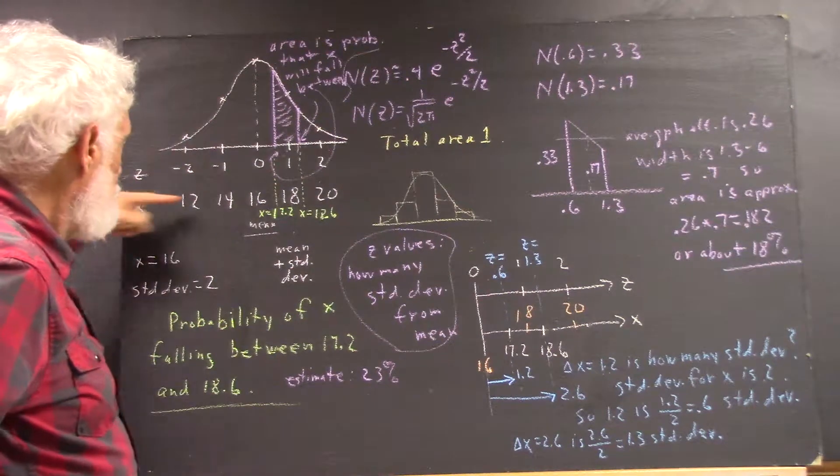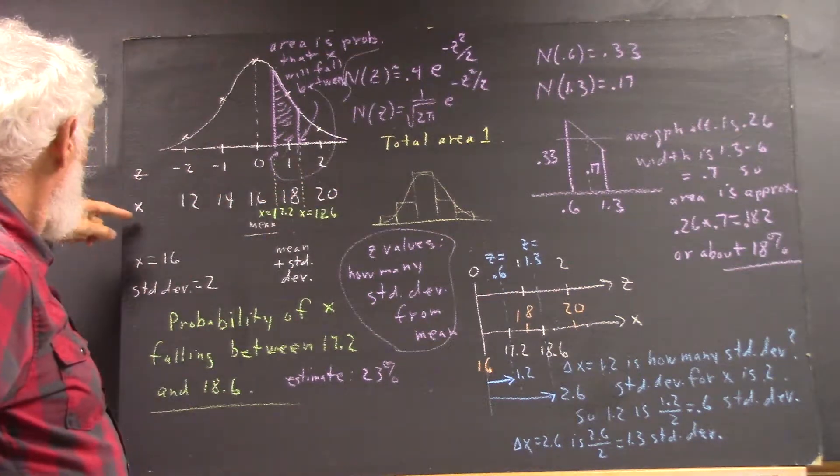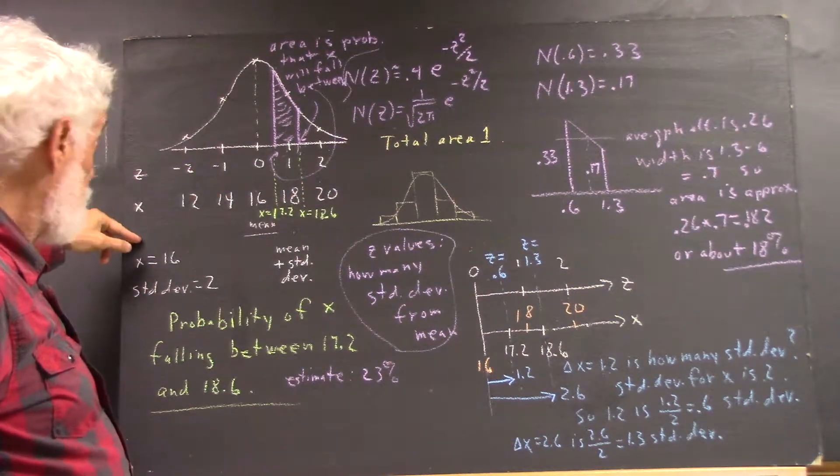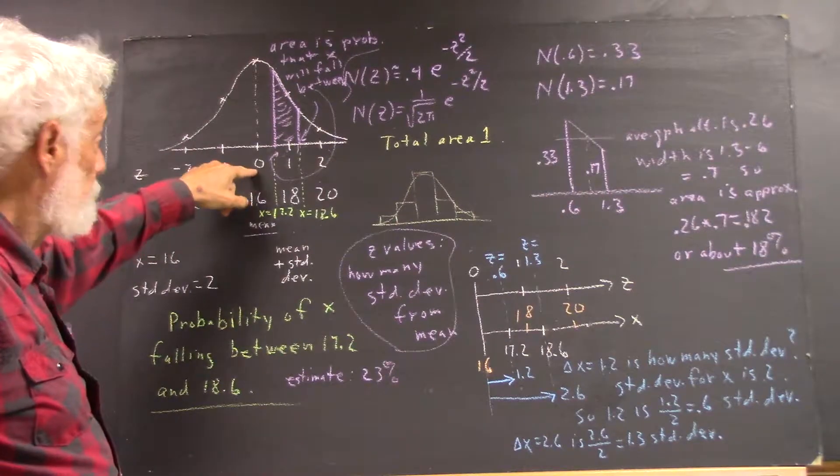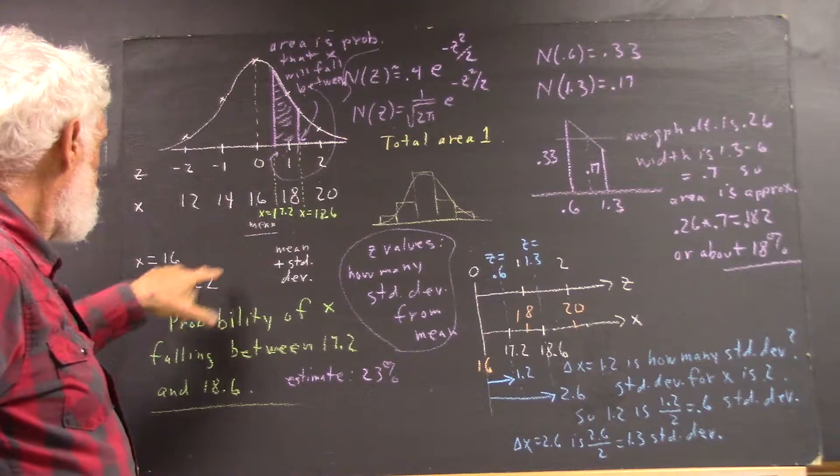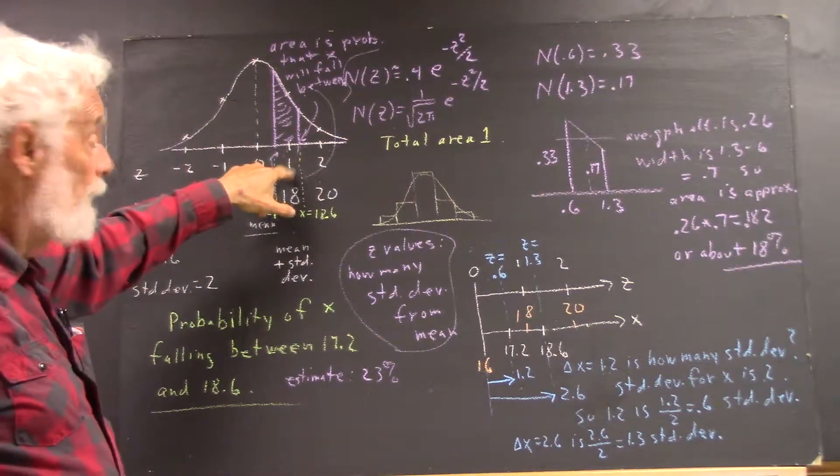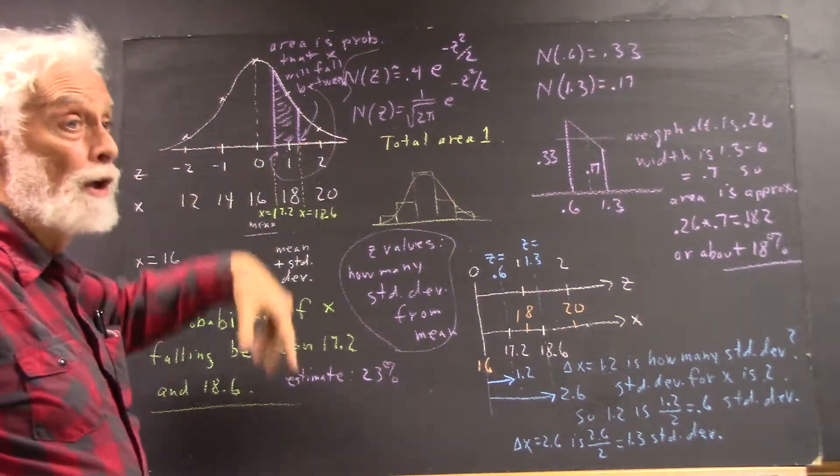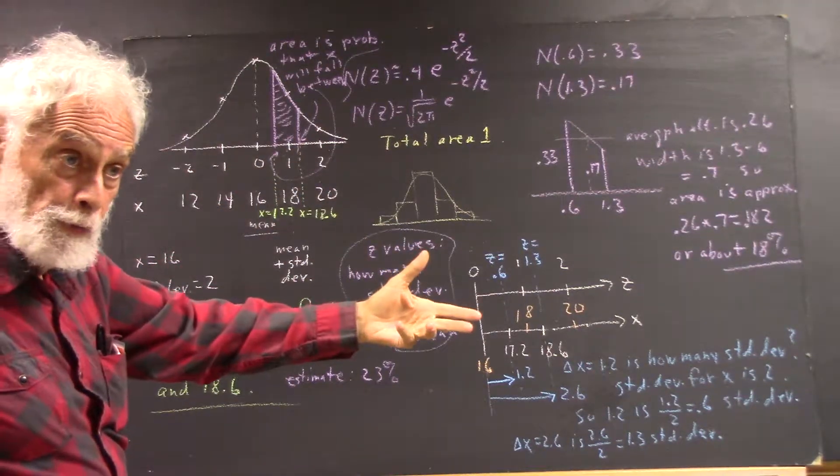Then we can relabel the axis, or dual label the axis with x values, the mean corresponding to z equals 0, adding standard deviation to the mean to correspond to z equals 1, because the z values are your number of standard deviations from the mean.